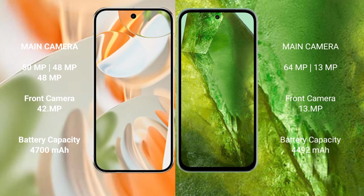The Google Pixel 9 Pro features a triple rear camera setup: 50MP plus 48MP plus 48MP, with a 42MP front camera. The Google Pixel 8a features a dual rear camera setup: 64MP plus 13MP, with a 13MP front camera.